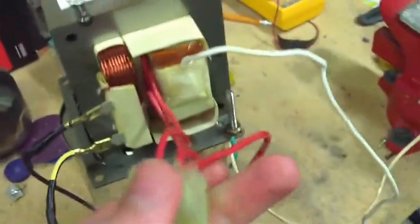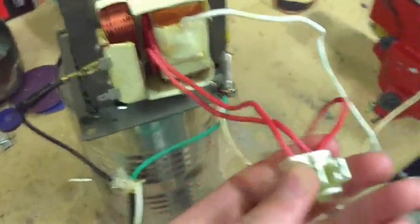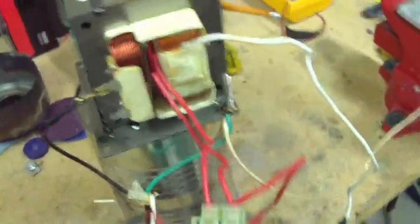And this is a third coil here that's for the filament in the magnetron. It's only like 3 or 4 volts, but it can provide a couple amps. I'm not going to use that.